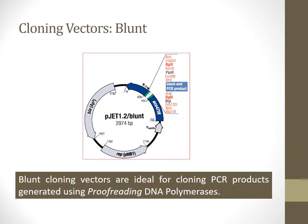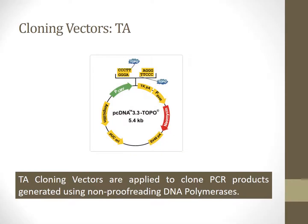Blunt cloning vectors are routinely used to ligate DNA and construct genomic libraries. These genomic libraries are in turn sequenced to determine the sequence of organisms. TA cloning vectors can be utilized to ligate PCR products which have been developed using non-proof reading polymerases. These plasmid vectors are essential for sequencing small genomic DNA molecules.